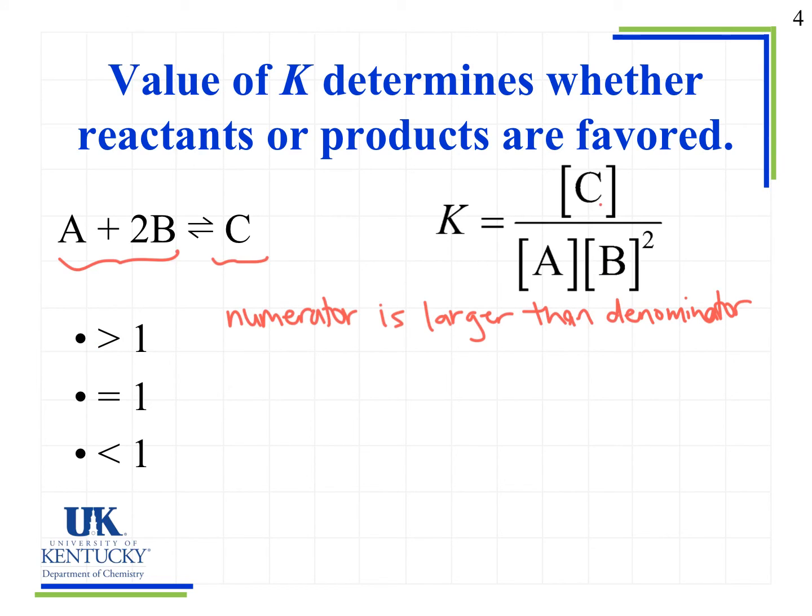Think about it in very simple terms. If we have 3 over 1 versus 1 over 3, this will give us a value greater than 1. The 1 third gives us a value less than 1. So in order for this to be greater than 1, the number on the top has to be larger than the number on the bottom. And what that tells us is that we are favoring products.